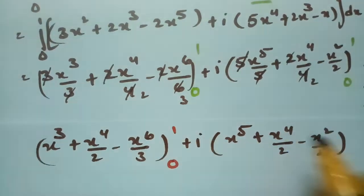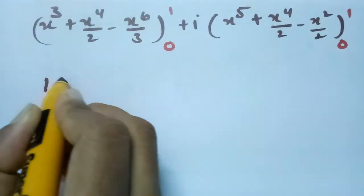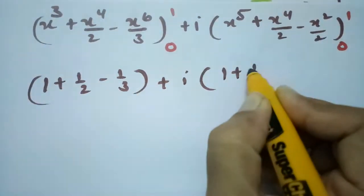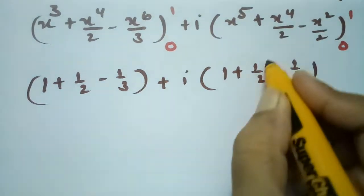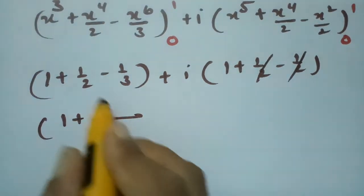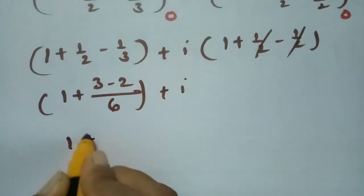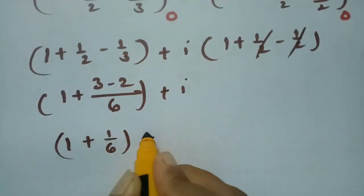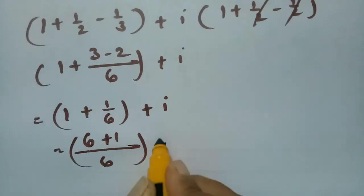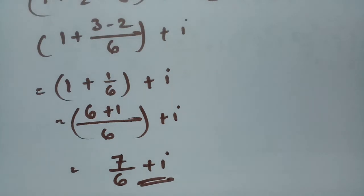Taking LCM of 6 for the real part: 6/6 + 3/6 − 2/6 = 7/6. The imaginary part simplifies to i·1 = i. So the final answer is 7/6 + i.